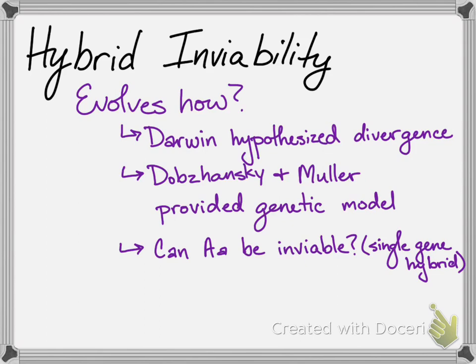Because if big A little a hybrids are inviable, how would a population full of big A in the gene pool transition to become little a after a mutation arises?